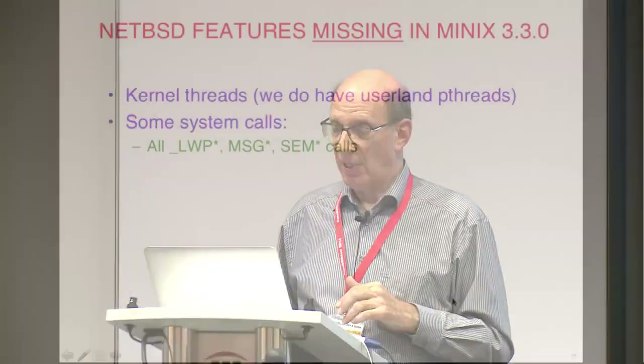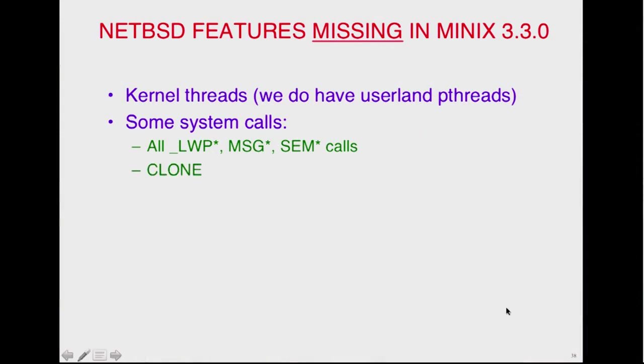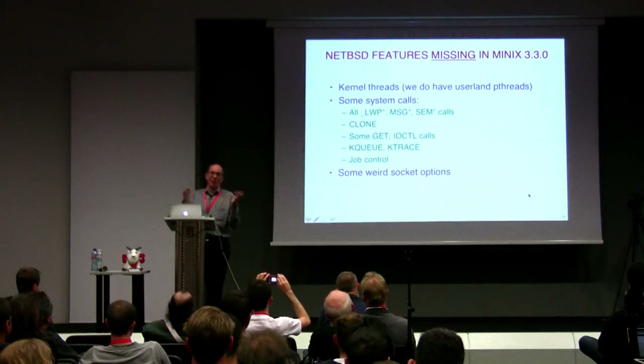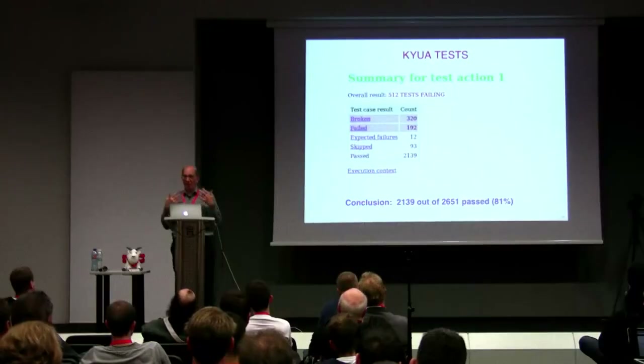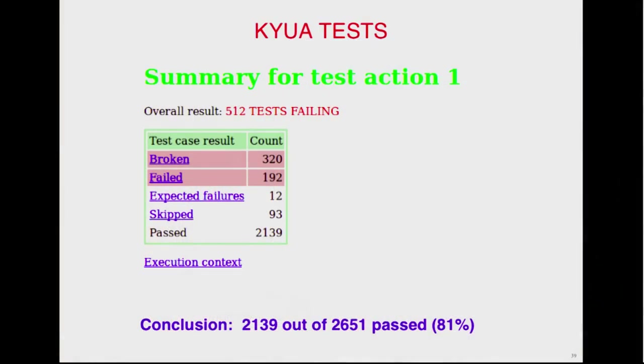The things we don't have: we don't have kernel threads — we have pthreads in user land, so packages that need pthreads and don't care whether they're user land or kernel work fine. Some system calls are missing — we don't have LWP, message queue, or SEM calls; we don't have clone; some get and ioctl calls; KQ and Ktrace aren't there; job control isn't there; some weird socket options aren't there. But a lot of it's there. We can build 4,200 packages, and 81% of the QA tests passed. So we're 81% compatible with NetBSD in some abstract sense.